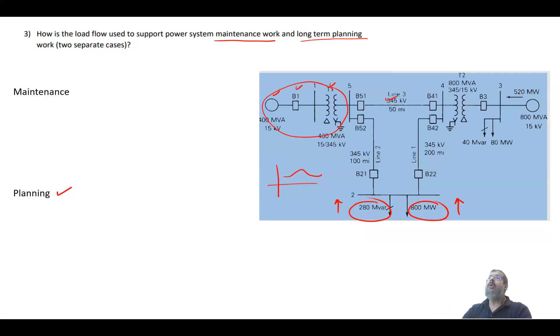Then maybe if they are overloaded, I need to plan to upgrade the transformers, upgrade the overhead lines, get higher units, or add more lines so that we can handle the increase in the demand. Both the maintenance and the long-term planning will need the power flow to see the consequences of that.